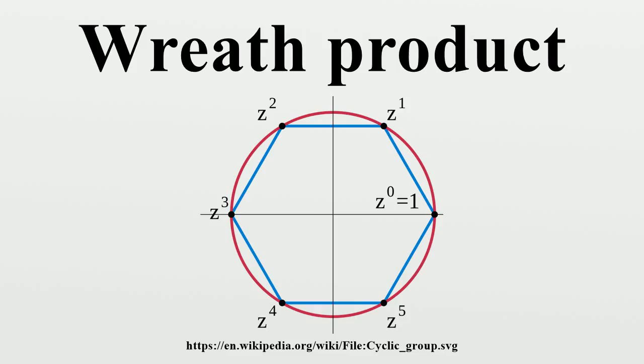In the most common case, one takes omega equals H where H acts in a natural way on itself by left multiplication. In this case, the unrestricted and restrictive wreath product may be denoted by A wreath H. This is called the regular wreath product.